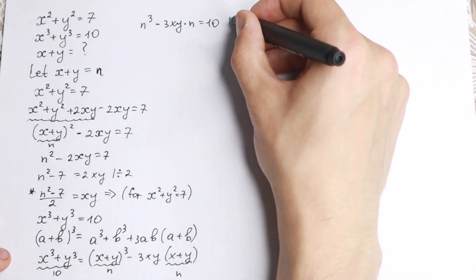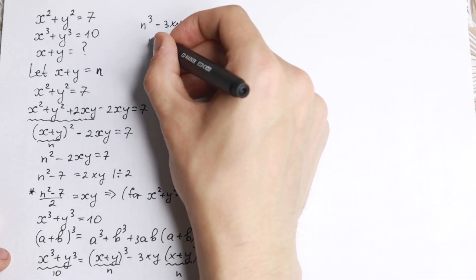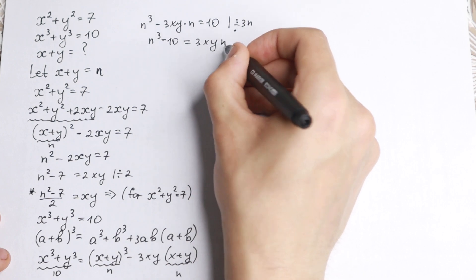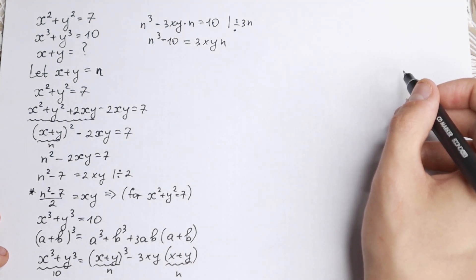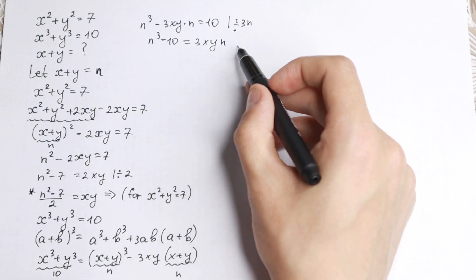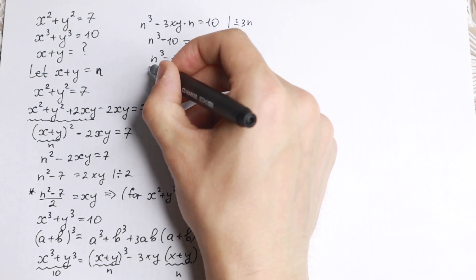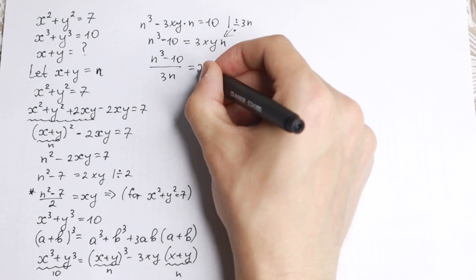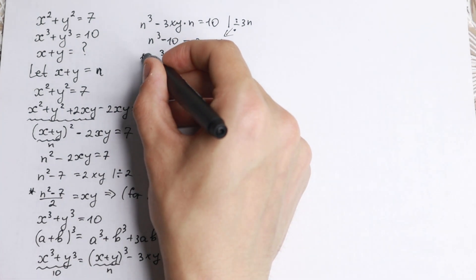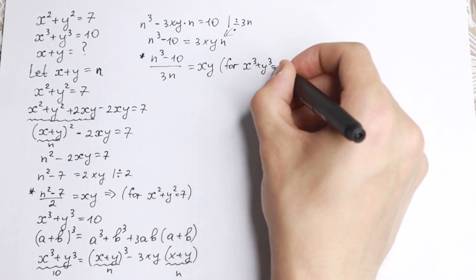Now let's rearrange: n cubed minus 10 equals 3xy times n, and dividing both sides by 3n gives us n cubed minus 10 over 3n equals xy. So we've found a second expression for xy, this one coming from x cubed plus y cubed equals 10.